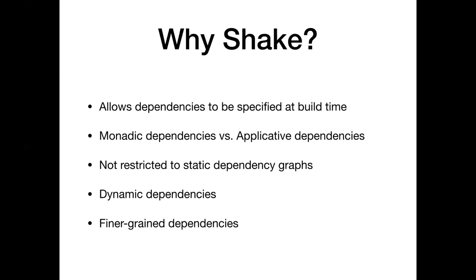So why Shake? The first thing about Shake is that it allows your dependencies to be specified at build time. You get monadic dependencies or applicative dependencies - you can do something and then depend on it. So there's no static dependency graph. Whereas in a regular Make file, you pretty much get what you put down. You have to be constantly either generating the Make file or constructing it, or being limited by what you can put in it. Shake gives us all these abilities to be dynamic.